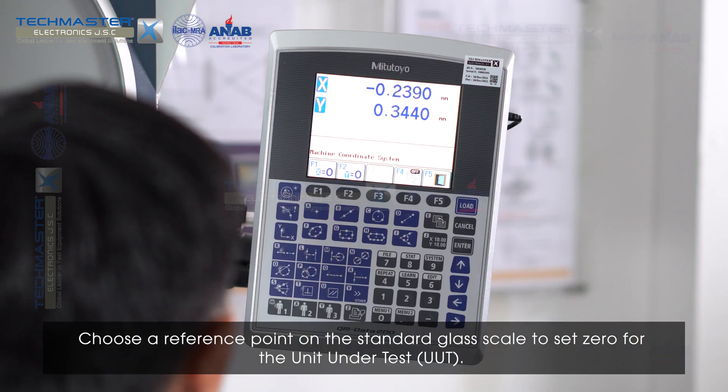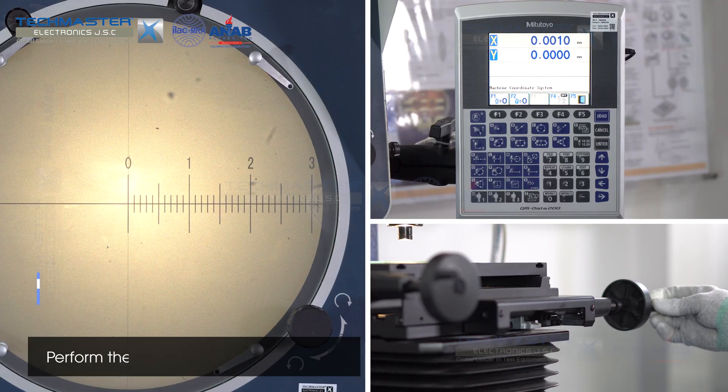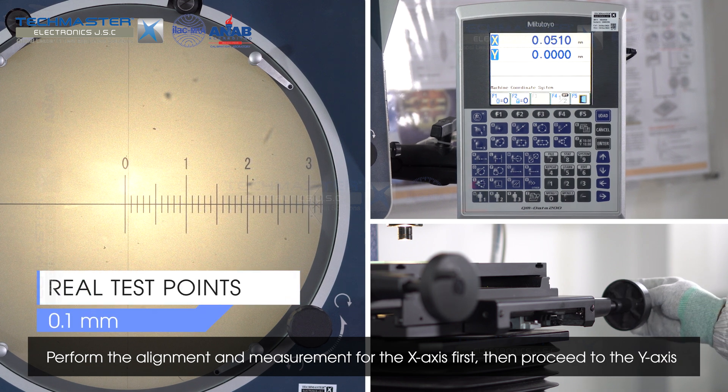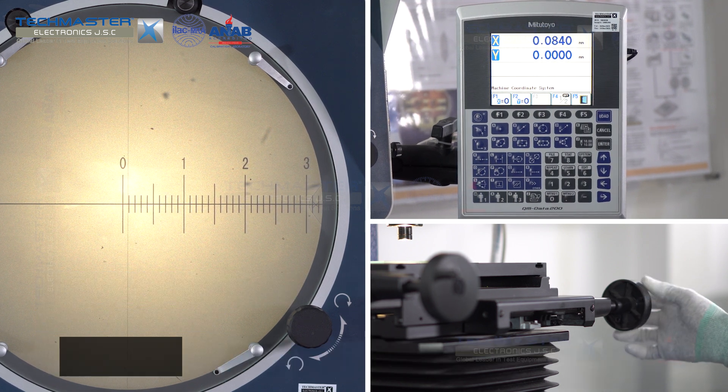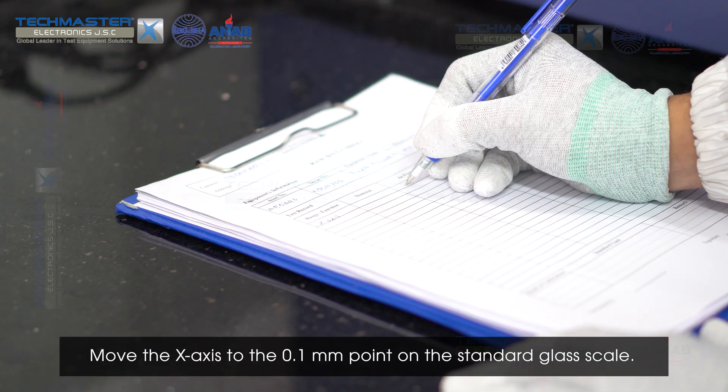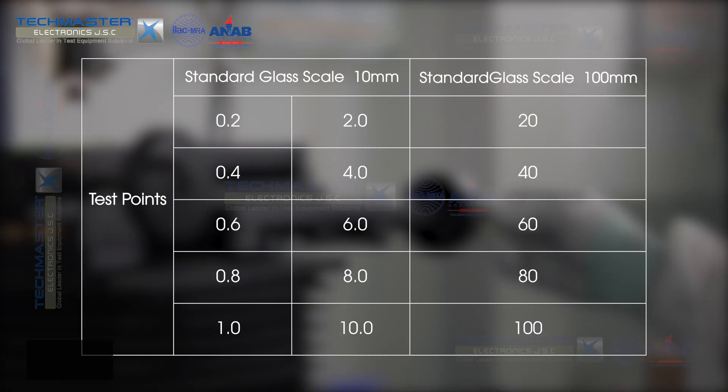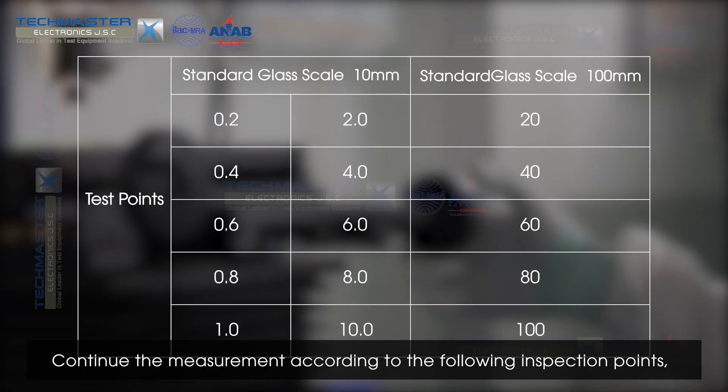Choose a reference point on the standard glass scale to set zero for the unit under test. Measurement for the x-axis first, then proceed to the y-axis. Move the x-axis to the 0.1 mm point on the standard glass scale. Record the displayed value on the unit under test. Continue the measurement according to the following inspection points.